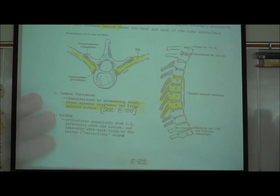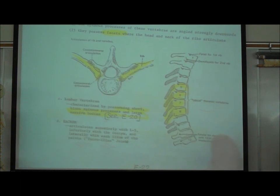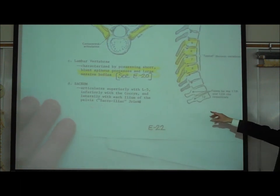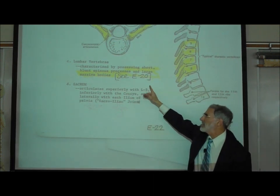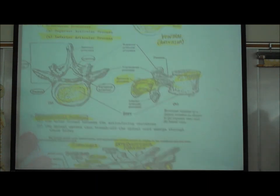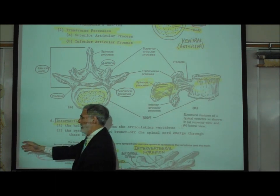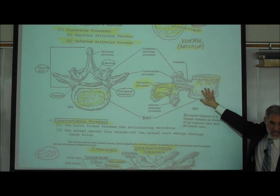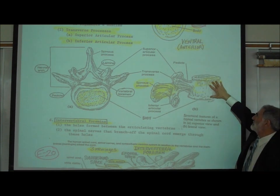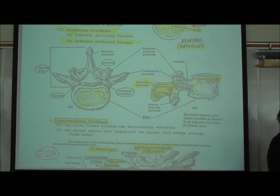To recognize a lumbar vertebra: lumbar vertebrae are characterized by short, blunt spinous processes and very large, massive bodies. Looking at page E20, a characteristic lumbar vertebra shows a big heavy body and a short, blunt spinous process — very heavy vertebrae overall.